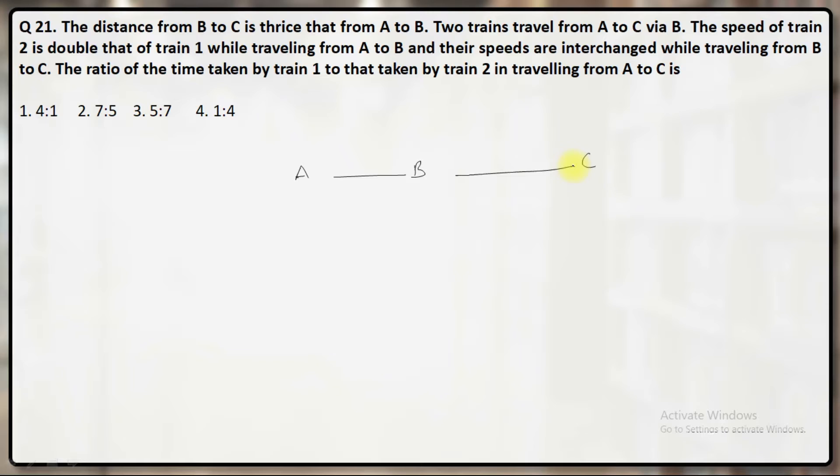The distance between A and B, then B and C. The distance from B to C is twice that from A to B. Let us say the distance between A and B is X and B and C is 3X.